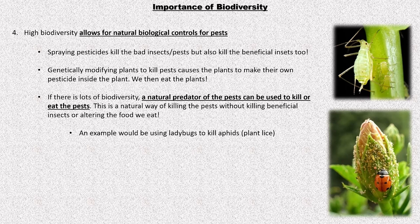If you genetically modify a plant to kill pests, that causes the plant to make its own pesticides — a great alternative to spraying, and beneficial insects won't die, only insects that bite the plant. But think about this: that's a GMO plant, not organic. We eat those plants, so those pesticides go into our bodies.